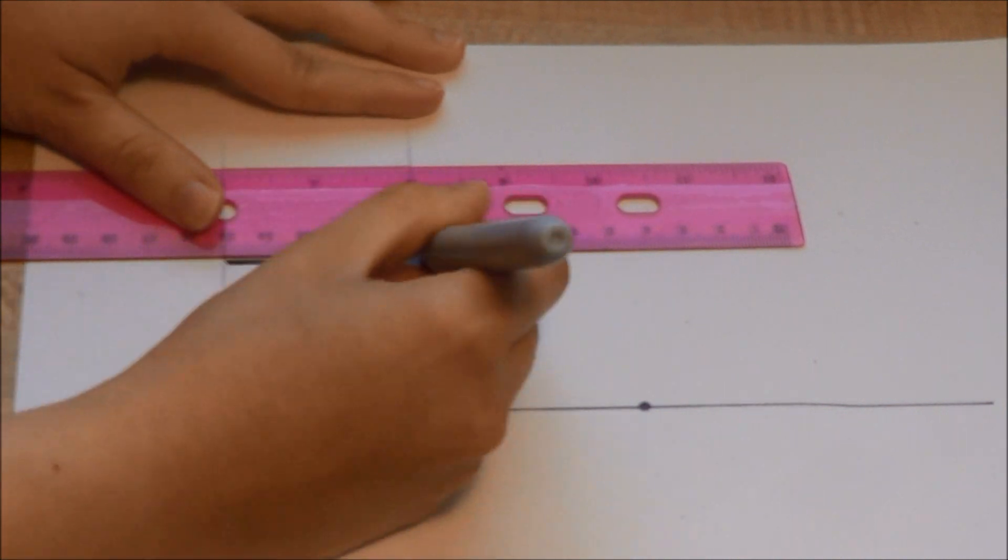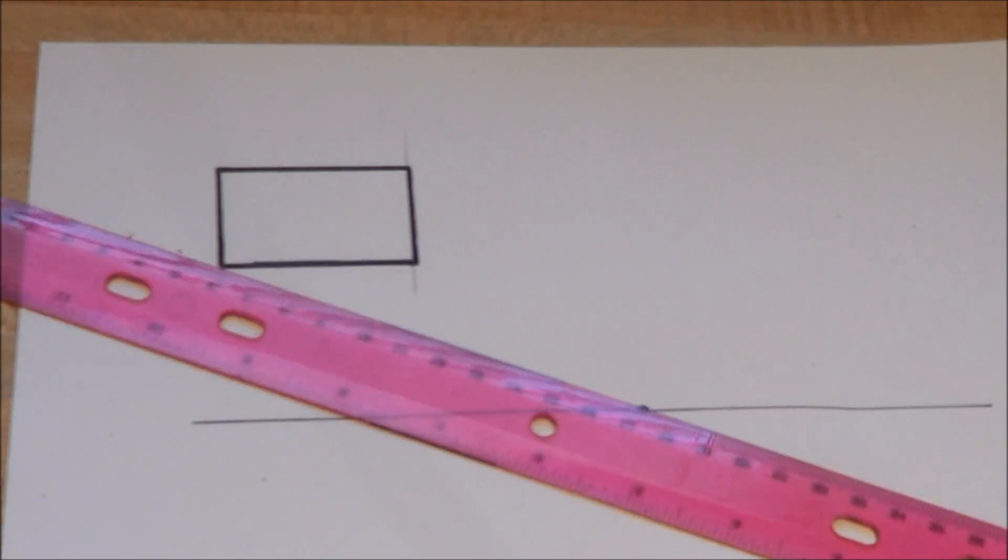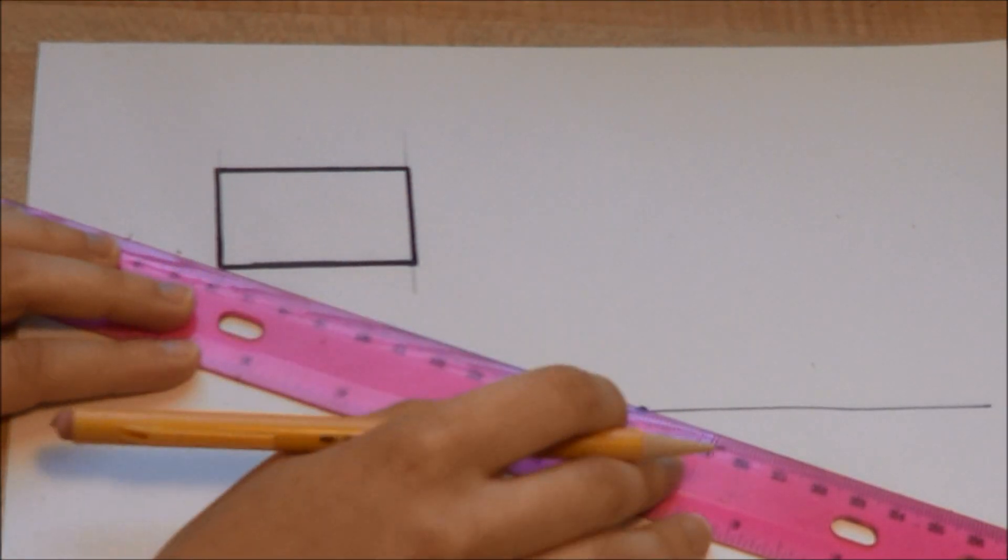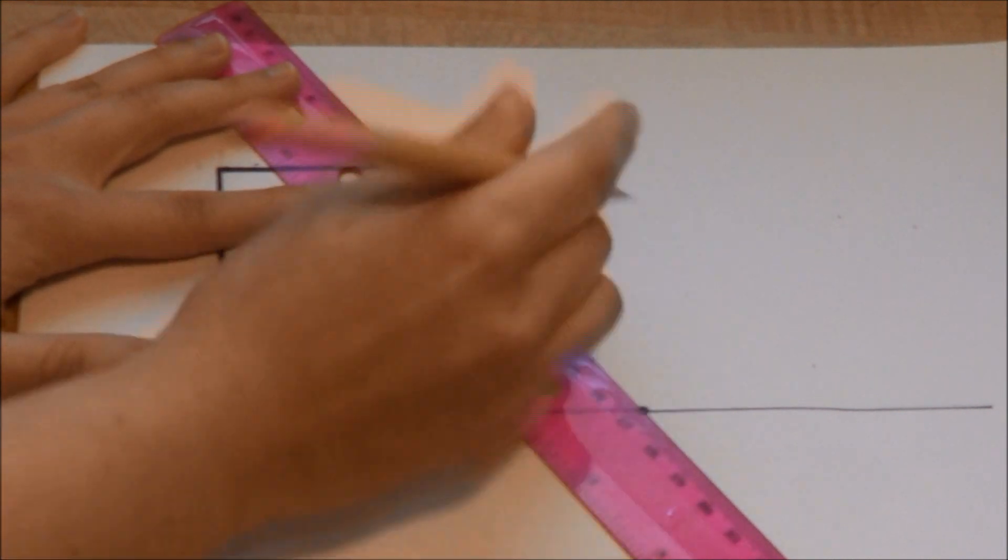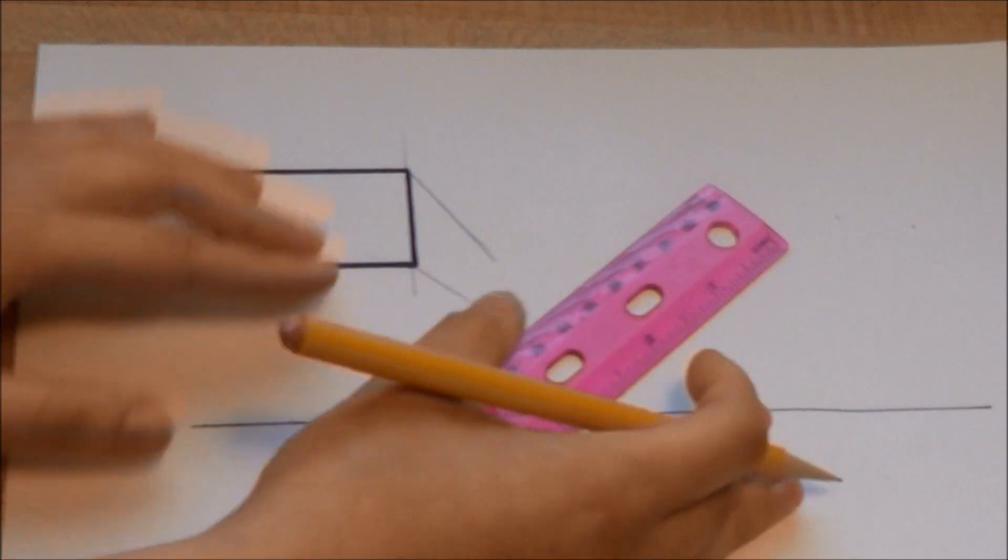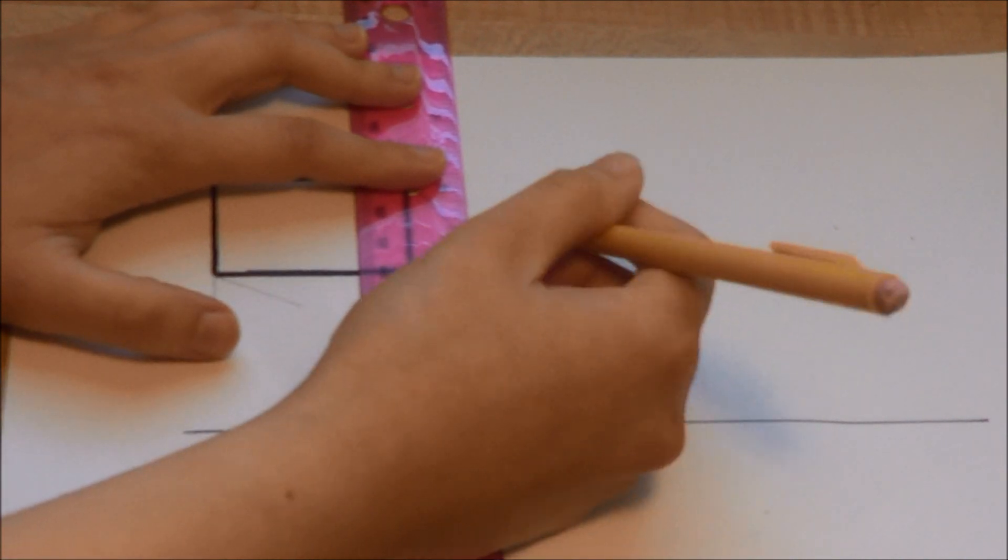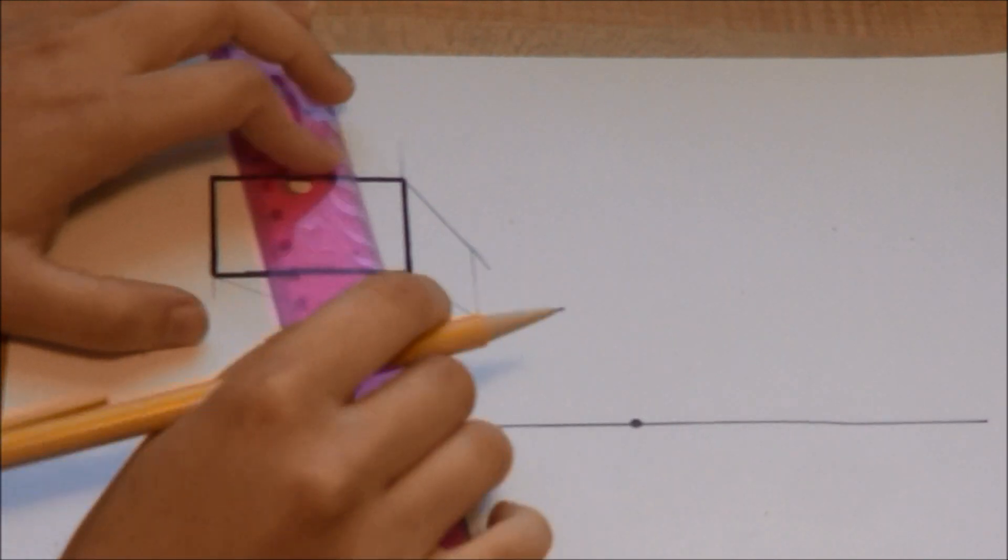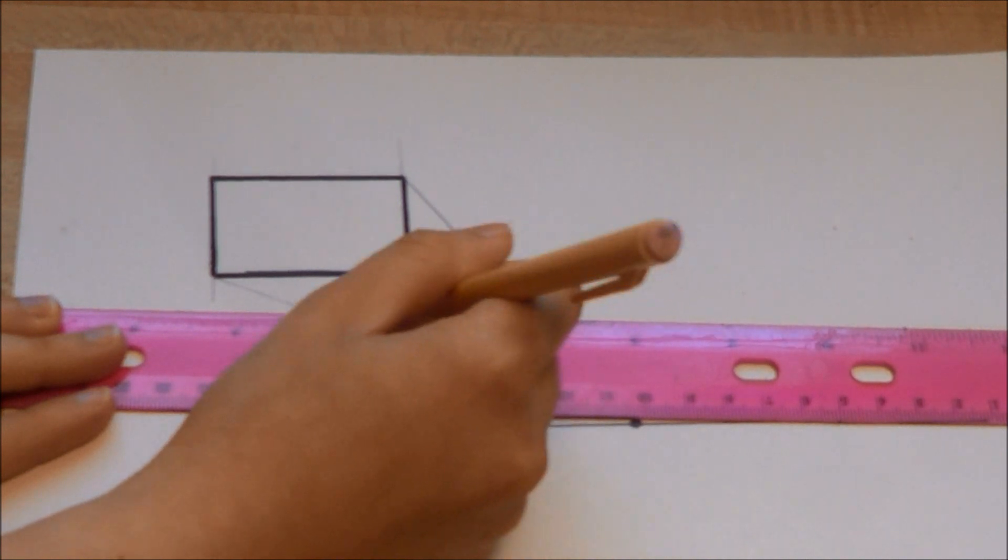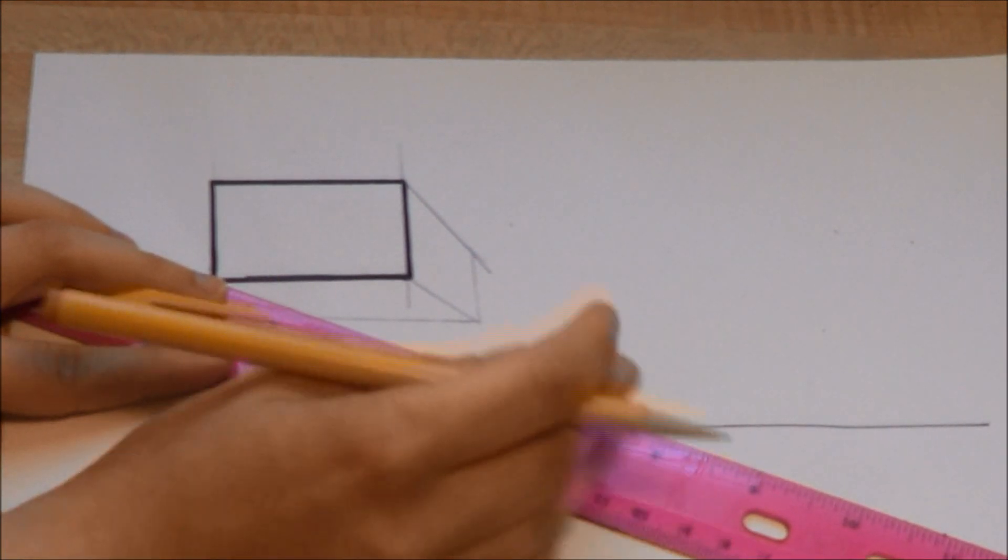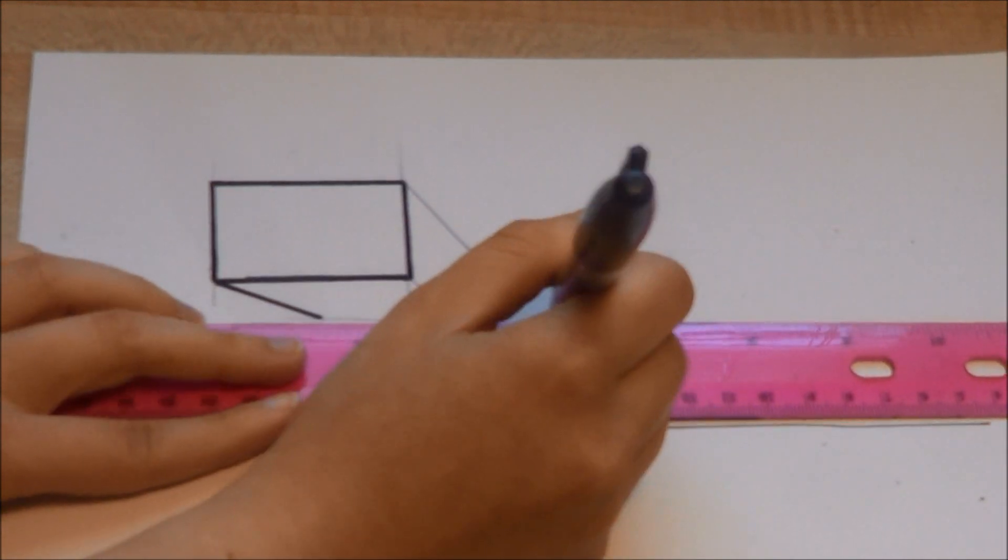I'm going to go over the lines I'm keeping with a sharpie and then erase the lines I made in pencil. To turn this rectangle into a prism, I'm going to add orthogonals. Orthogonal lines protrude from the corners formed by vertical and horizontal lines and extend to the vanishing point. Now I'll go over these lines in sharpie and erase my guidelines.